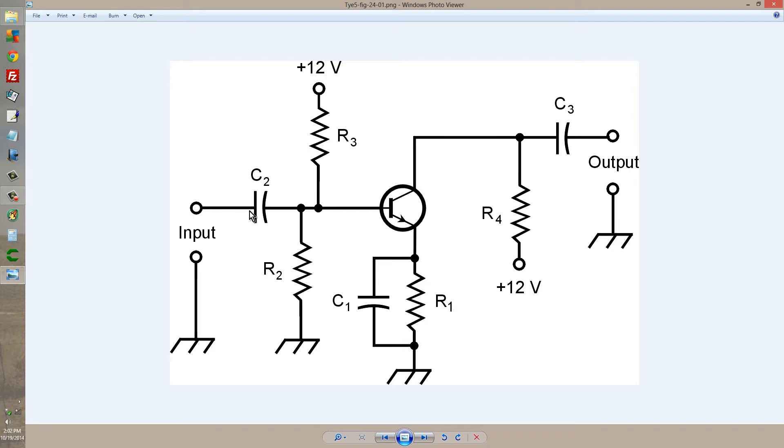C2 keeps the bias for the bipolar transistor from getting back, the DC bias from getting back and disturbing whatever circuit has come before. R2 and R3 bias this NPN bipolar transistor for Class A operation.